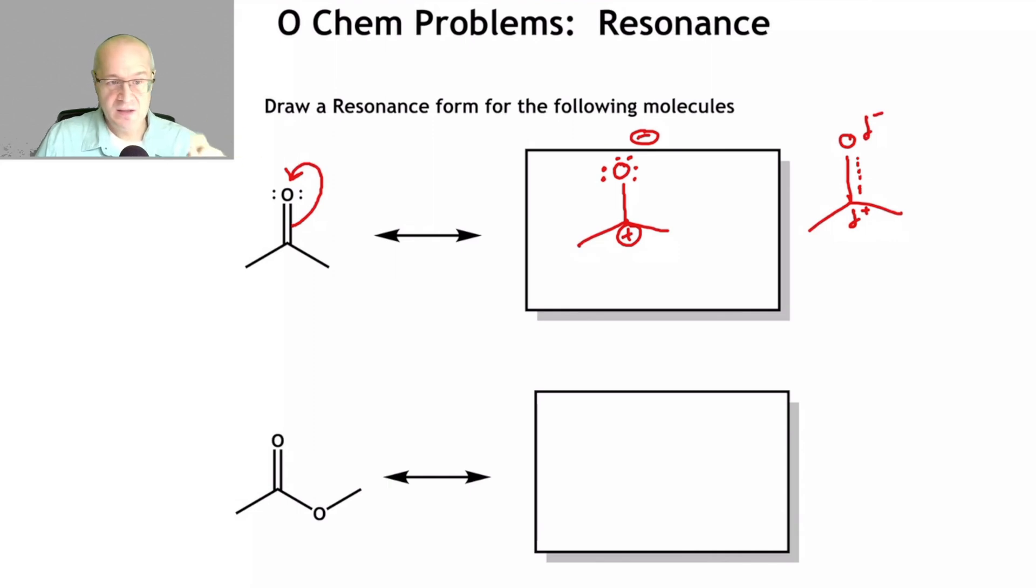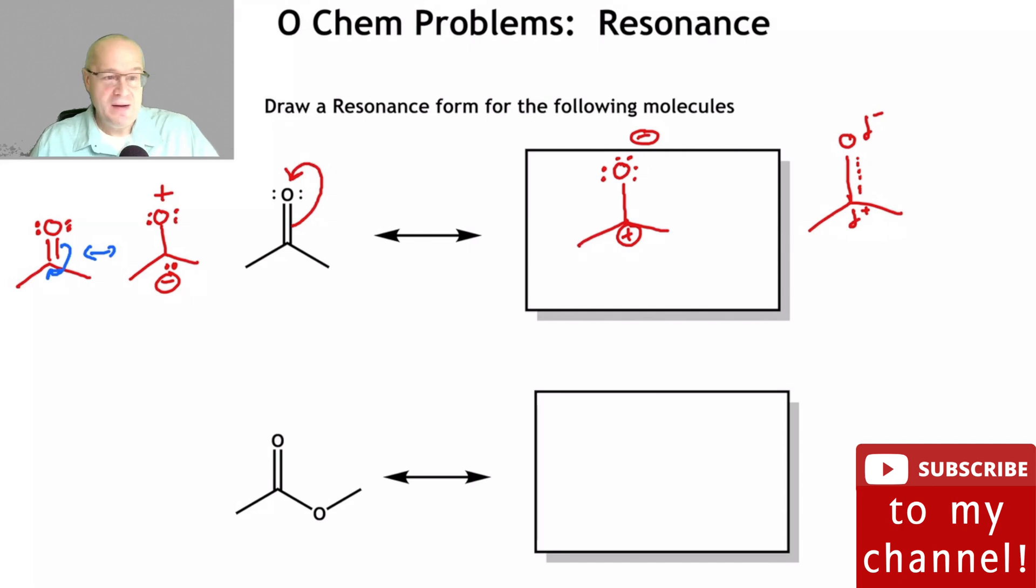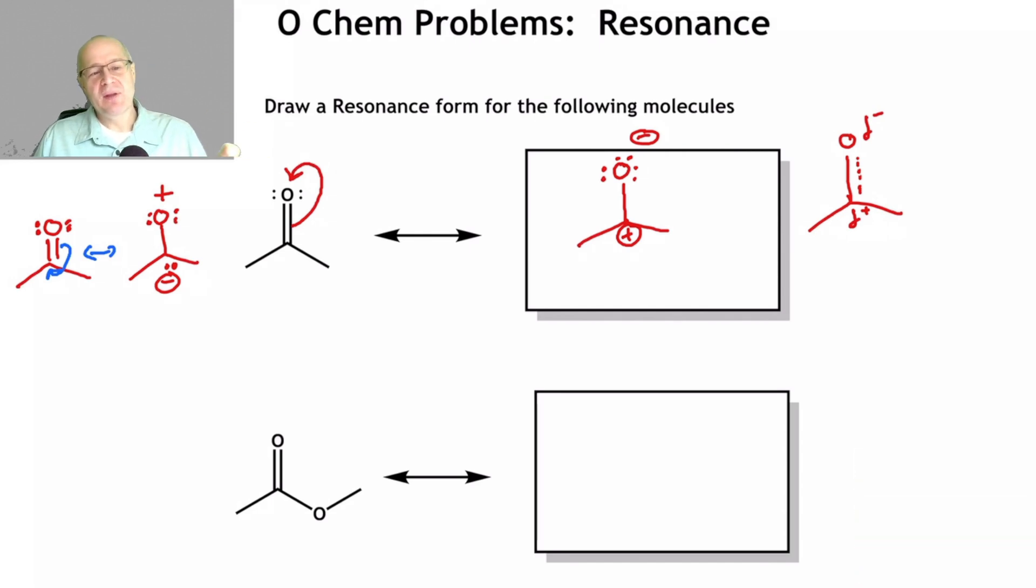Now, I often get questions like this, and this is a very good question in my opinion. Why can't we do this? And then move the electrons down to carbon. And then have something that looks, you know, something like this. There's nothing saying you can't do that. In fact, I just did it, so obviously it can be done. But you have to consider the major and minor contributors to the overall hybrid structure.